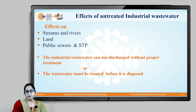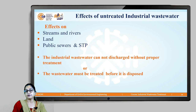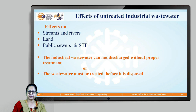Now, if industrial wastewater is not treated and is disposed of into water bodies or receiving bodies like streams and rivers, or on land for irrigation, or into a public sewer and sewage treatment plant — what will happen? The nature of industrial wastewater is such that if released without treatment into any water body, it will have very detrimental effects and will destroy the ecology of streams and rivers.